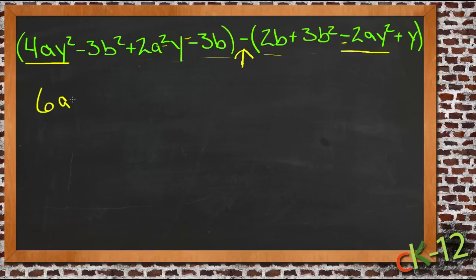So we'll have 6ay squared. 4 minus a negative, which is 4 plus 2. So now those two are taken care of.